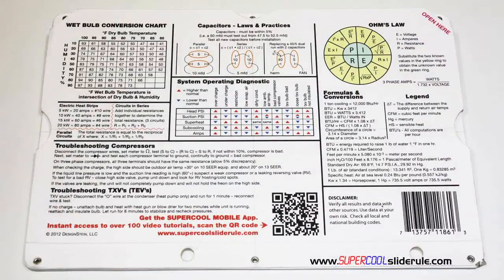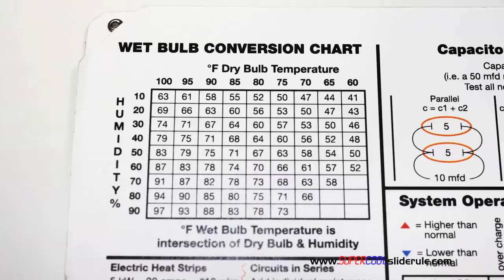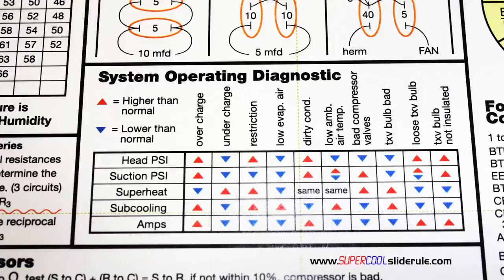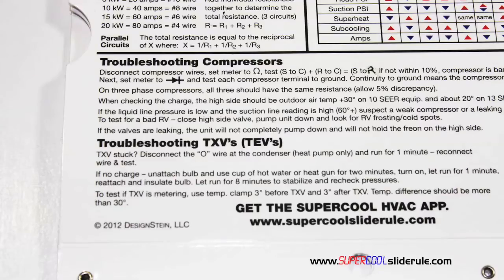The back cover also includes capacitor rules and practices, a wet bulb conversion chart, how to perform computations on series or parallel circuits, an electric heat strip guide, a complete system troubleshooting diagnostic chart, and how to troubleshoot compressors and TXV.